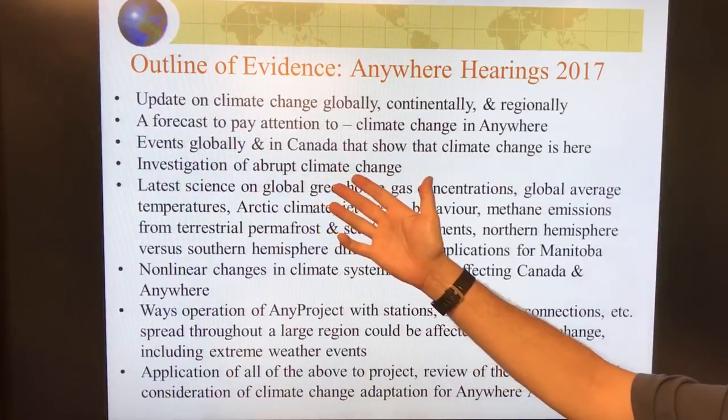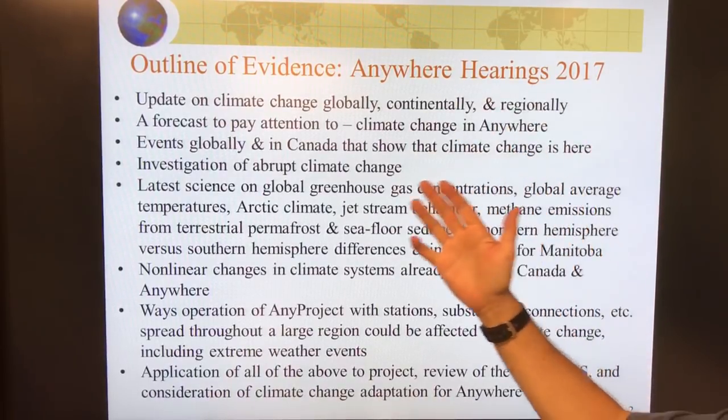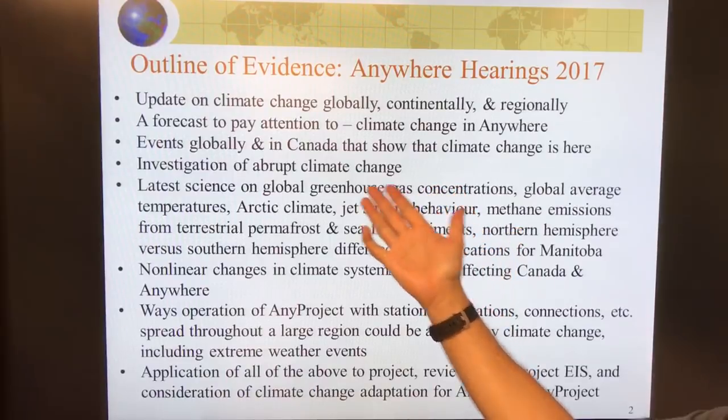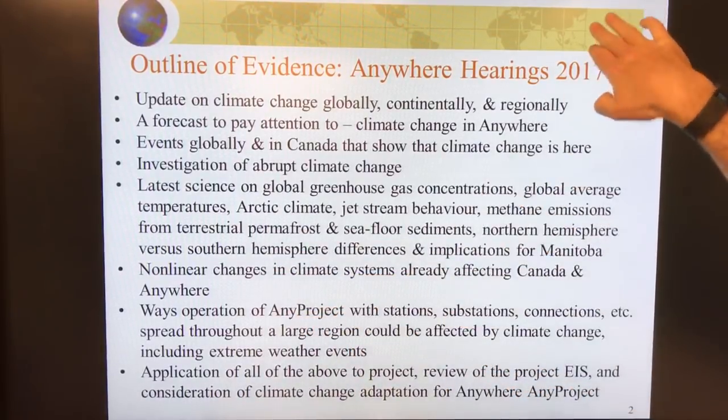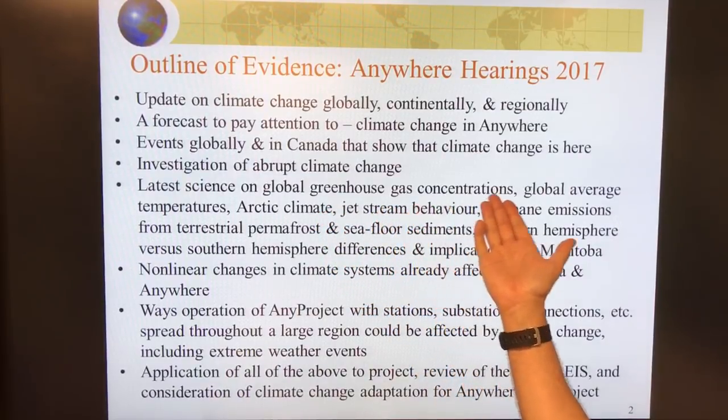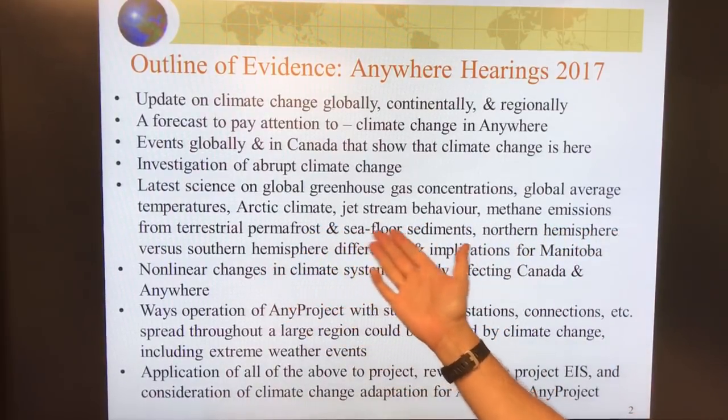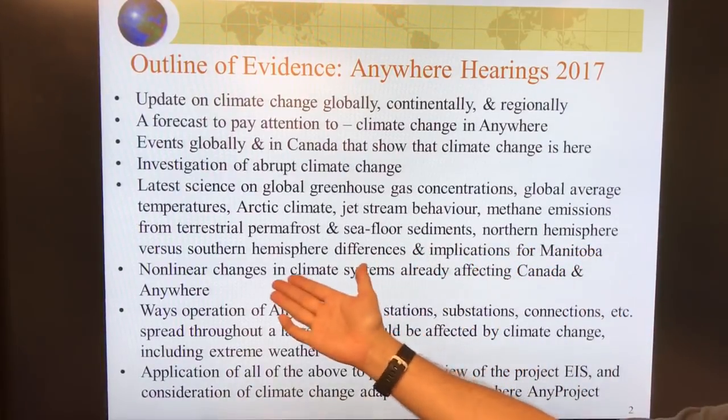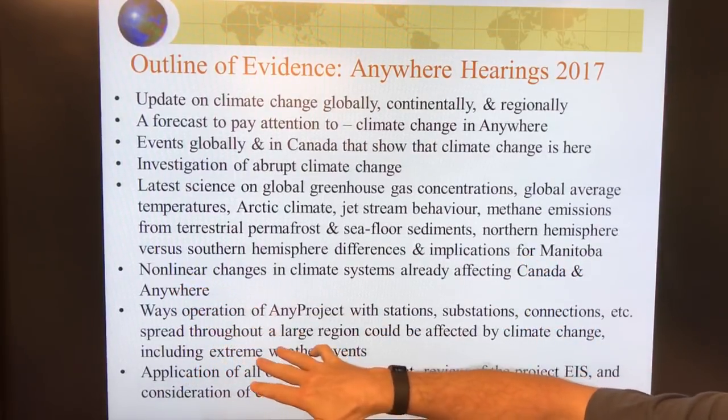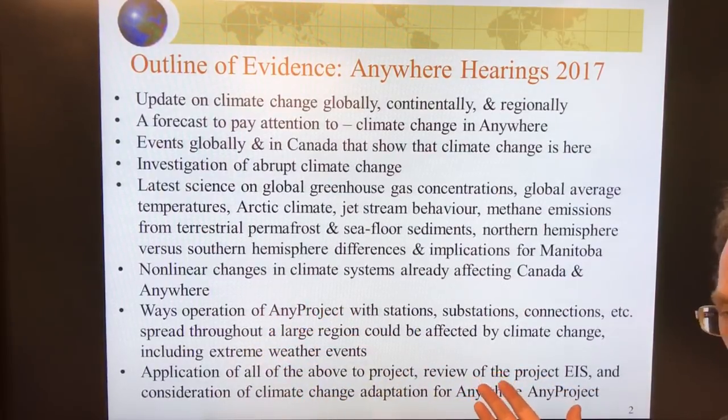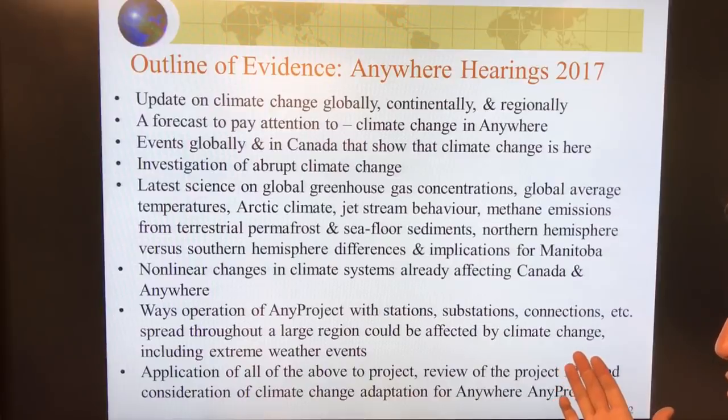So I would give an outline of the evidence at these hearings, anywhere hearings, anytime, for any project. I'd look at the climate change that's happening globally, continentally, and then regionally in the specific region, try to come up with a forecast of what's going to happen there in the future and how that will impact what we do in our design process. Events globally and in Canada or any other country that show that climate change is here. I'll talk about that investigation of abrupt climate change, abrupt changing very fast, nonlinear. It's not like a straight line, things are ramping up very quickly.